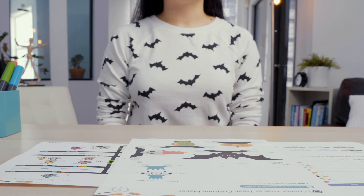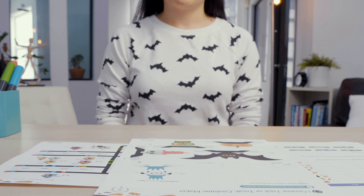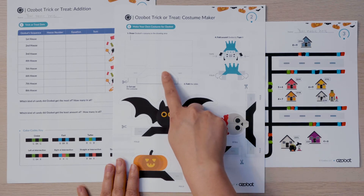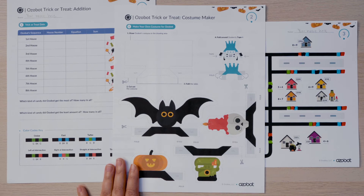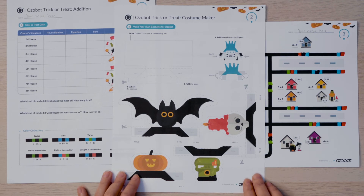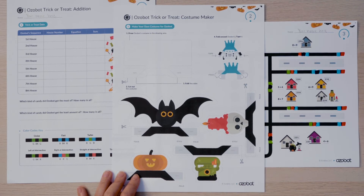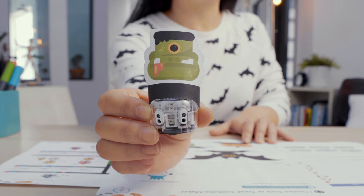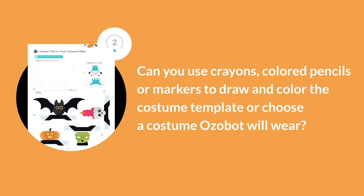Great job helping Ozobot come up with a plan for the houses it will visit. Before Ozobot can go trick-or-treating it needs to put on a costume. Look at the trick-or-treat costume maker sheet. There's a blank template for you to create a costume for Ozobot to wear, or you can choose one of the costumes already made for you. My Ozobot is going to dress up as a monster, so I cut out the costume and put it on my bot using tape. Can you use crayons, colored pencils, or markers to draw and color the costume template or choose a costume Ozobot will wear?